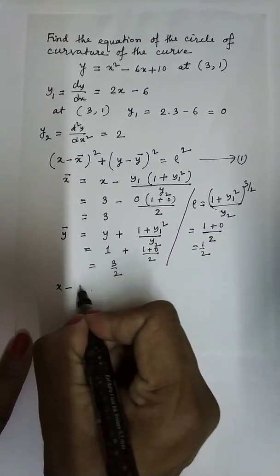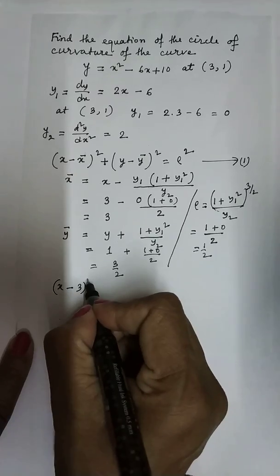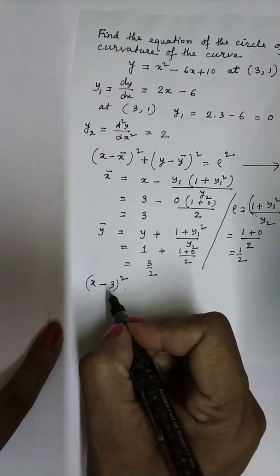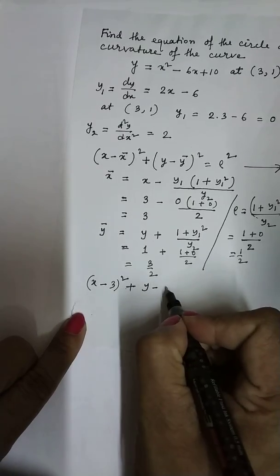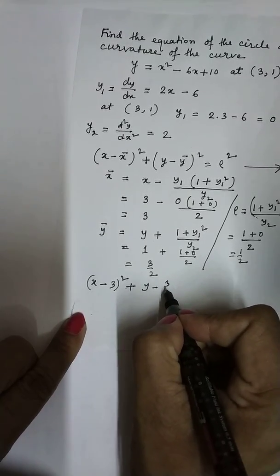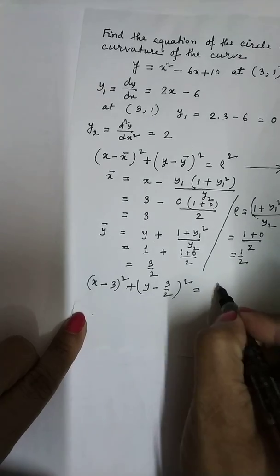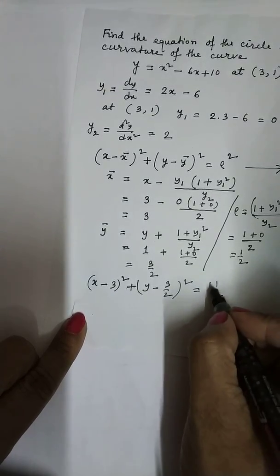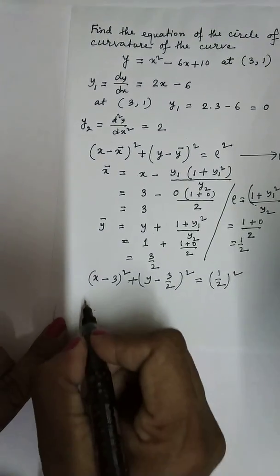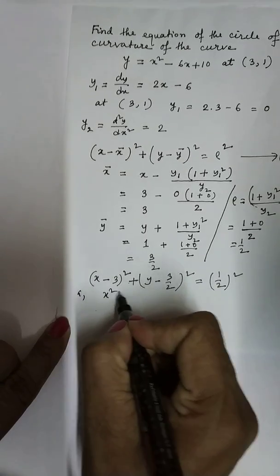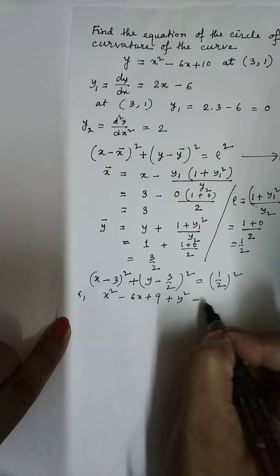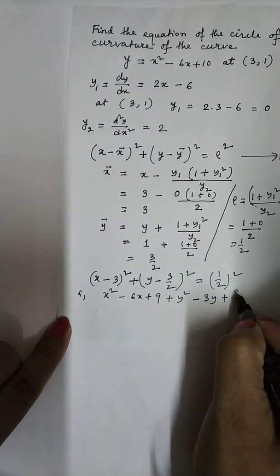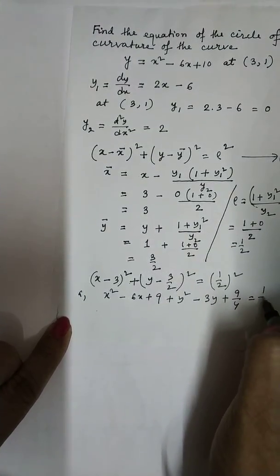We get (x - 3)² + (y - 3/2)² = (1/2)². So this is x² - 6x + 9 + y² - 3y + 9/4 equals 1/4.